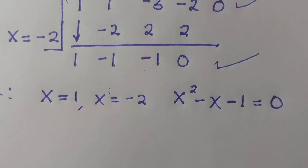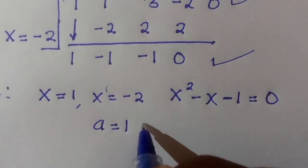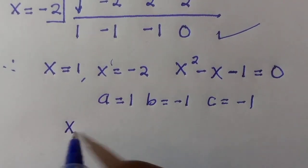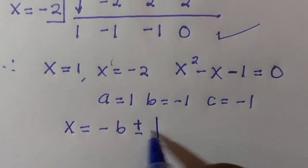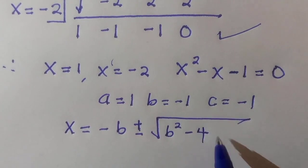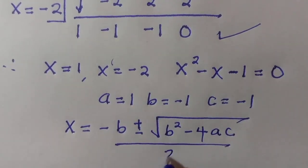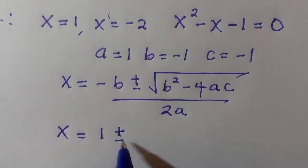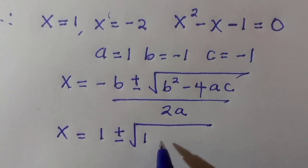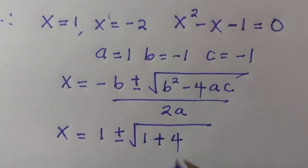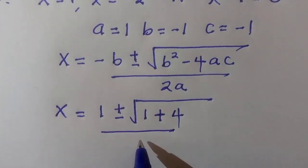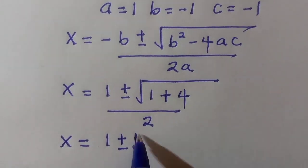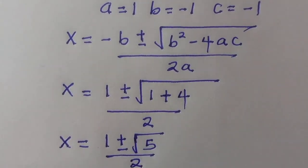We will now solve x squared minus x minus 1 equals 0 using the quadratic formula. The coefficient of x squared is a equals 1, b equals minus 1, and c equals minus 1. Substituting into the formula: x equals minus b plus or minus square root of b squared minus 4ac, divided by 2a. This gives x equals 1 plus or minus square root of 1 plus 4, divided by 2, which simplifies to x equals 1 plus or minus square root of 5, divided by 2.